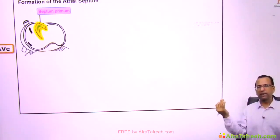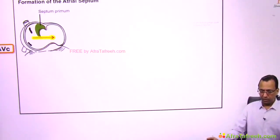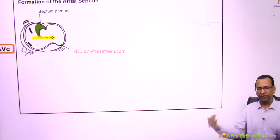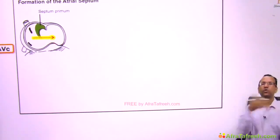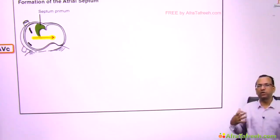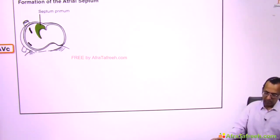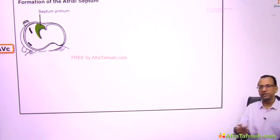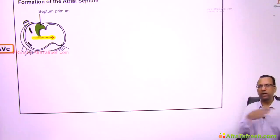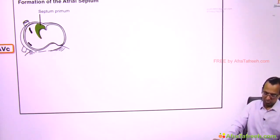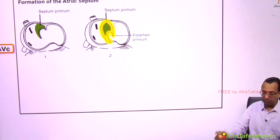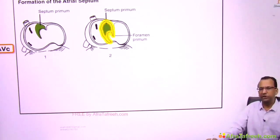There will now be a right atrium and a left atrium. In fetal circulation, the blood of the right atrium must directly go to the left atrium to bypass the lung, because the lungs are immature and they do not need much oxygen — oxygen is being provided by the mother at this moment. But there is a problem: this septum primum is going to fuse with the AV cushion. So how will you send blood from right atrium to left atrium?